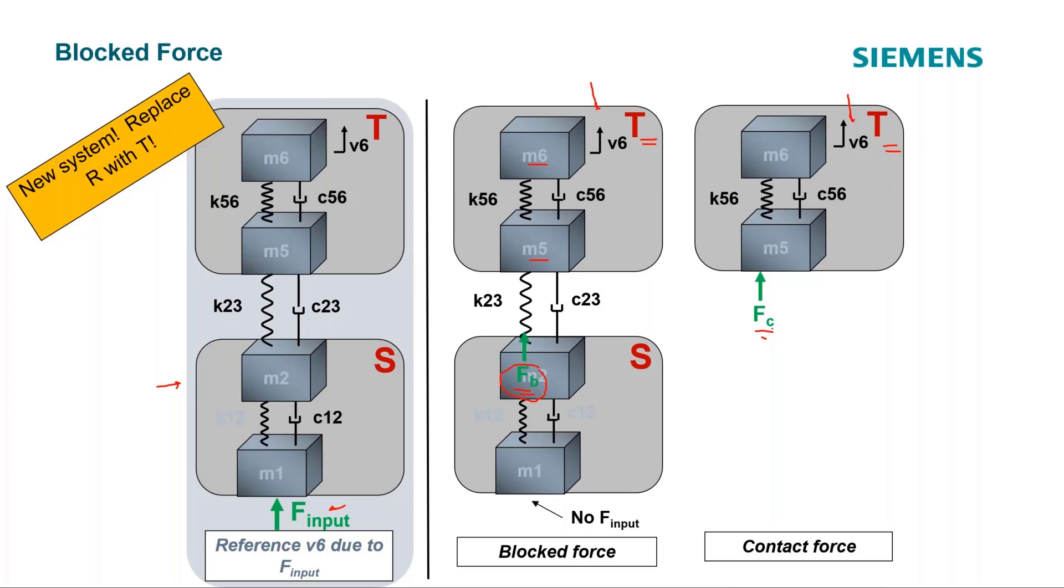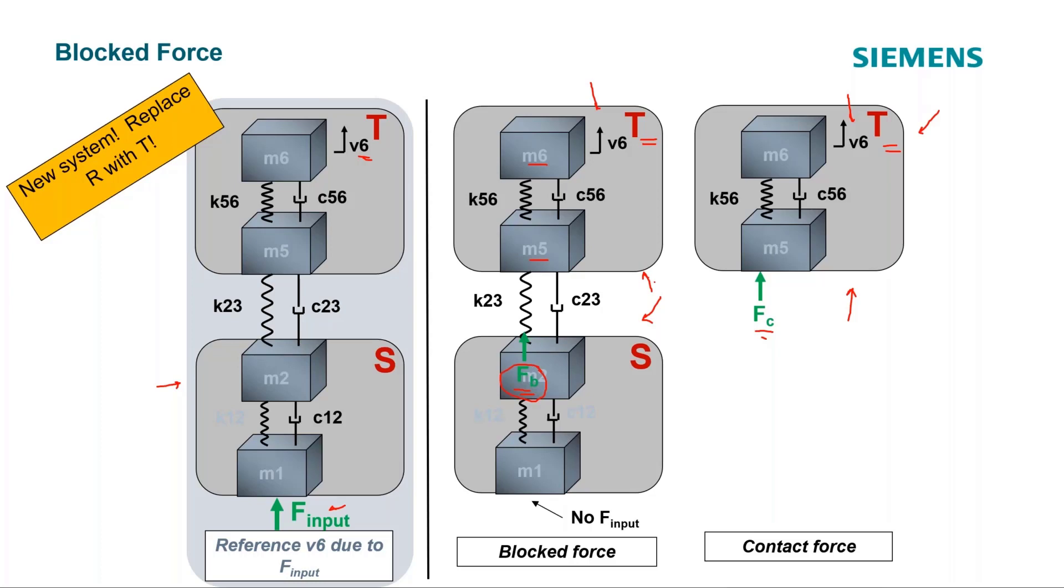And as I recall, when we did the contact force on the receiver system alone, we got a great match. And when we did the blocked force on the combined system, we got a great match for what V6 should be. Do you think we'll get a match from both of these situations, from this one and from this one? I got a feeling that they're both aren't going to work out this time with the new receiver. If you were to look at the data, this no longer works. So that contact force was dependent on the source and the receiver system.